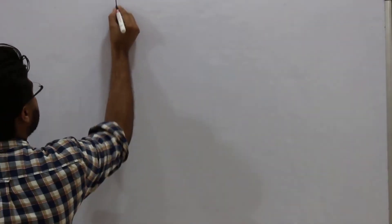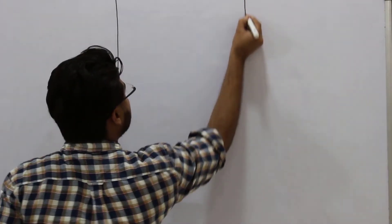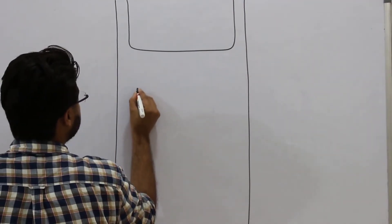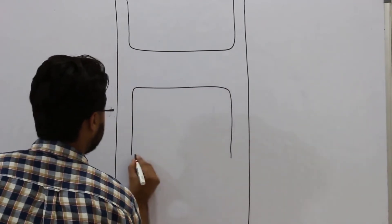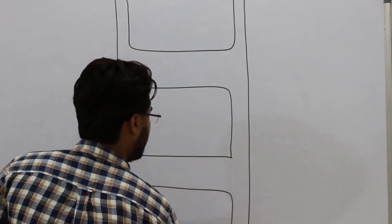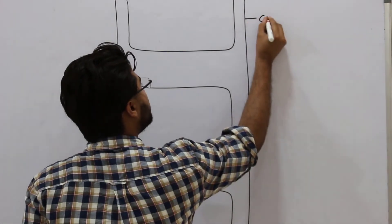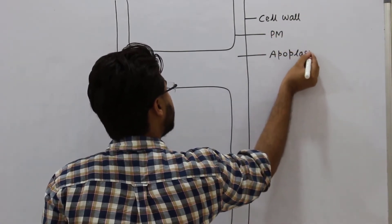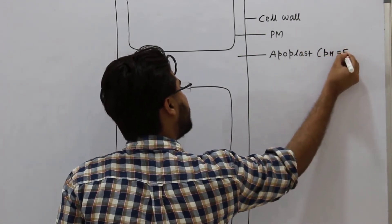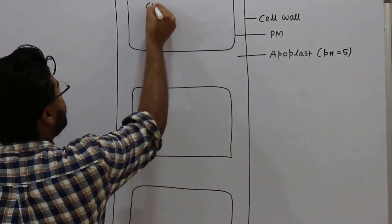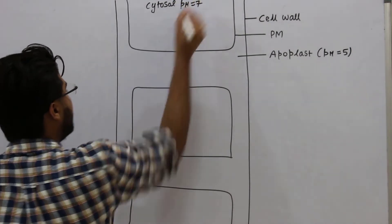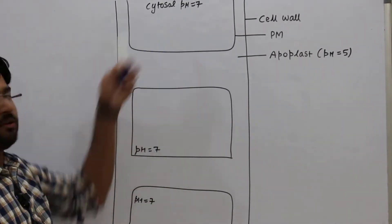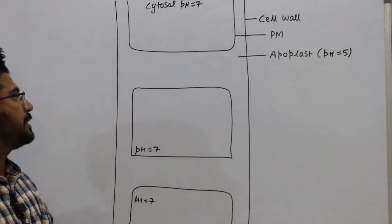In the plant system, the outermost boundary is the cell wall, the inner boundary is the plasma membrane, and the space between them is called the apoplast. The apoplast has a pH of approximately 5. The cytosol of every plant cell is maintained at approximately pH 7. We will understand why this pH difference exists between the apoplast and the cytosol.